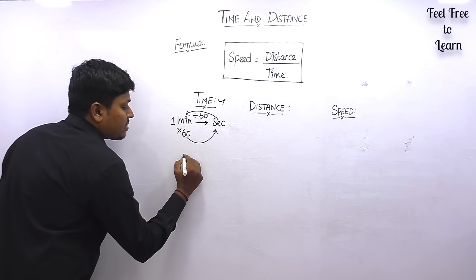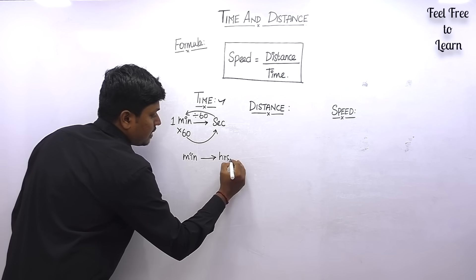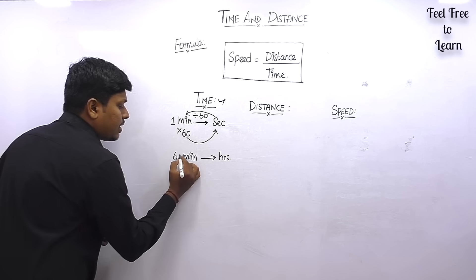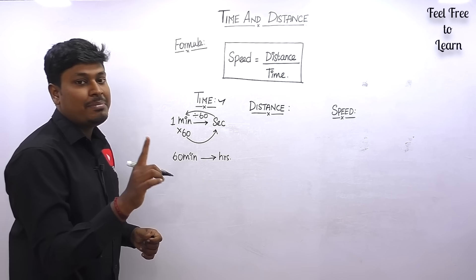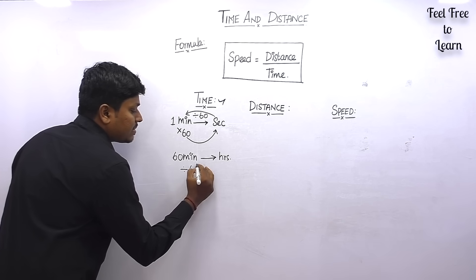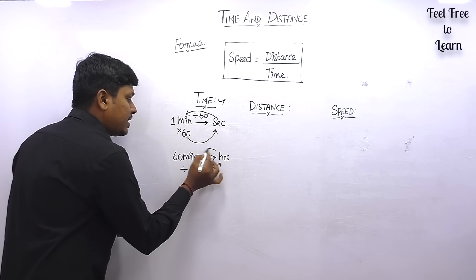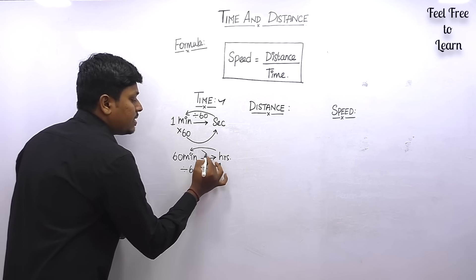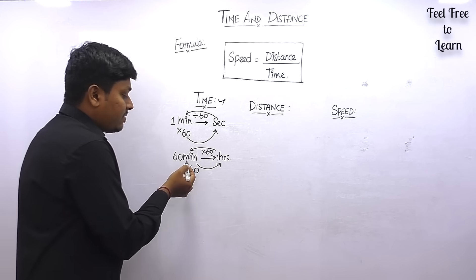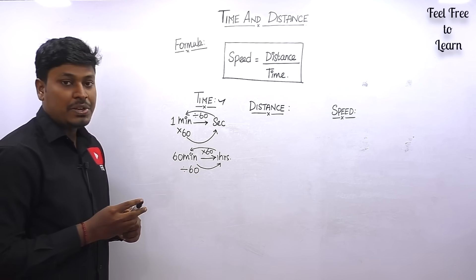Similarly, minutes to hours: since 60 minutes equals 1 hour, to convert minutes to hours divide by 60. To convert hours to minutes, multiply by 60 — 1 hour is 60 minutes. So: minutes to hours is divide by 60, and hours to minutes is multiply by 60.